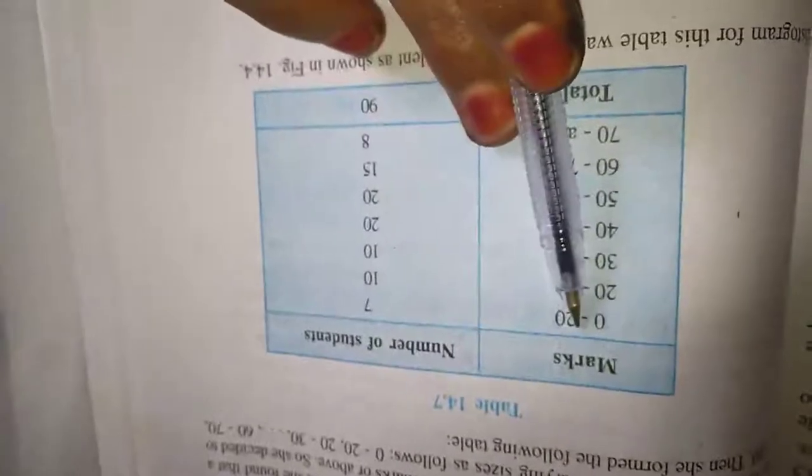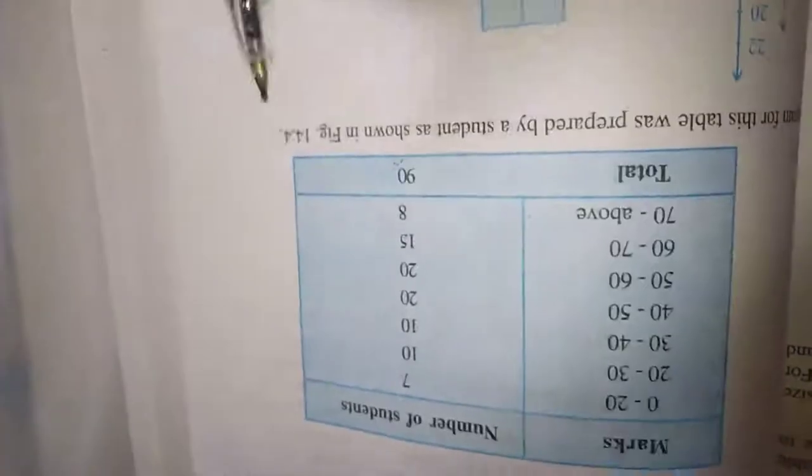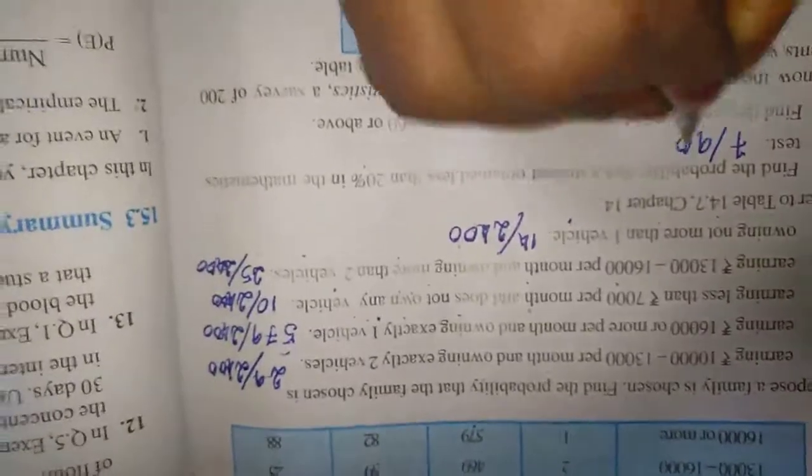Find the probability that a student obtained less than 20% in the mathematics test. We will see that page. See here, less than 20. So less than 20 is 7. Total is 90. So 7 by 90. First one answer is 7 by 90. I am going to write on that page. Here it will come 7 by 90.